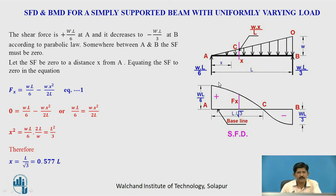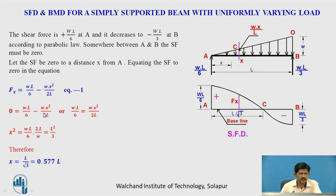Now we have to find out where the shear force is 0, or where shear force changes sign, to have the maximum bending moment. Putting FX equals 0 in equation 1: 0 equals WL by 6 minus WX square upon 2L. Taking the negative term to the left-hand side and solving, we get X square equals L square upon 3. Therefore X equals L by root 3, which equals 0.577L.